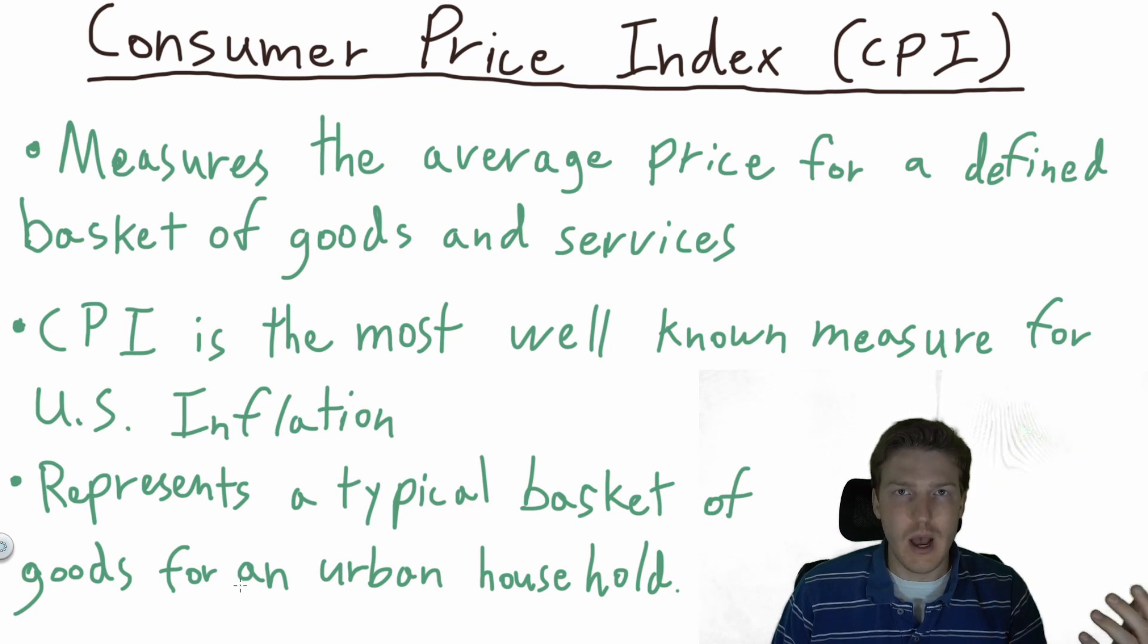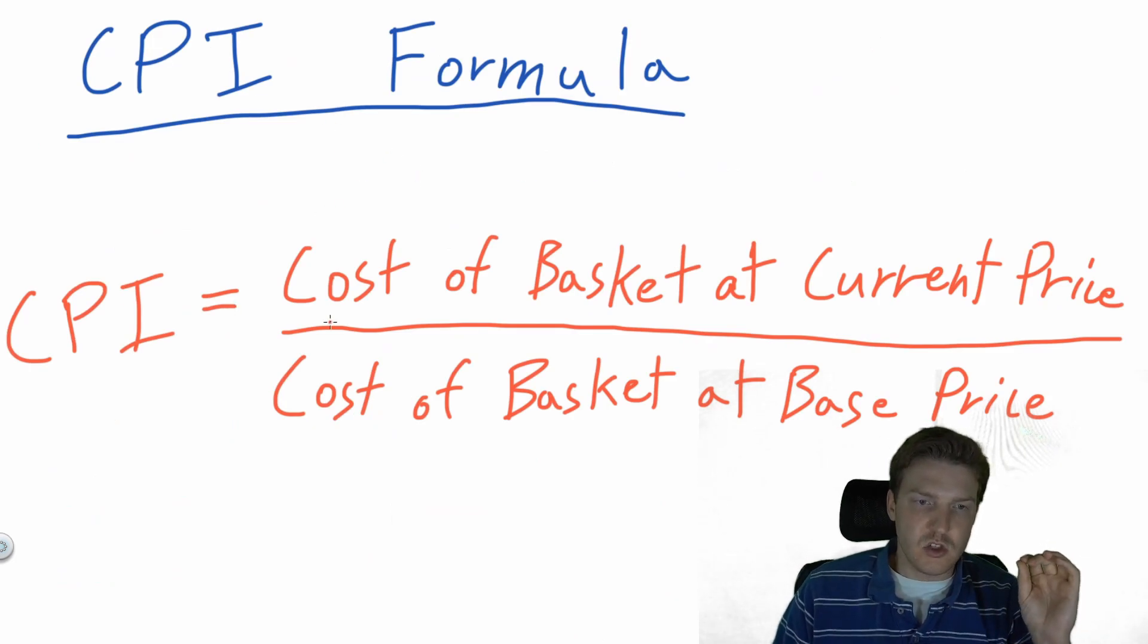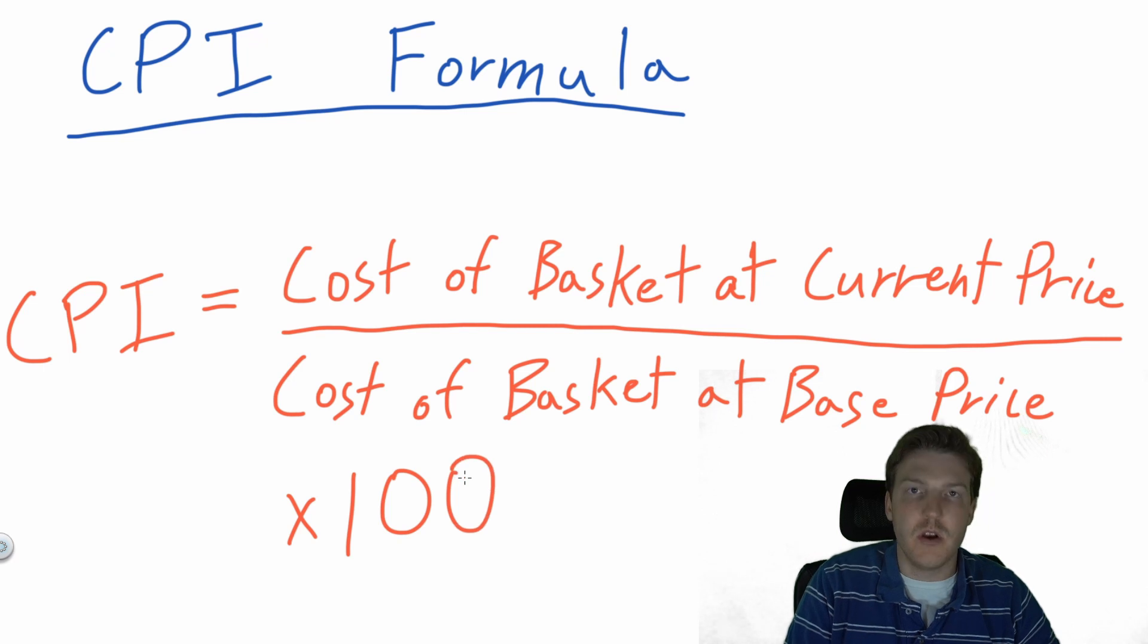Let's get into how it's calculated. Here is the CPI formula. The CPI is just the cost of a basket of goods at the current price divided by the cost of the same basket of goods at a base price. Also, if you want to be more technical, you would multiply that calculation by 100.